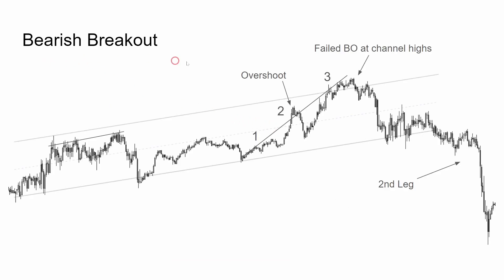Here's a bearish breakout over a span of a few days. You have three pushes higher. The second leg is overshooting. A failed breakout at the channel highs and then we get leg one, leg two move down. Push one, two, and three — break down, leg one, pull back, leg two.